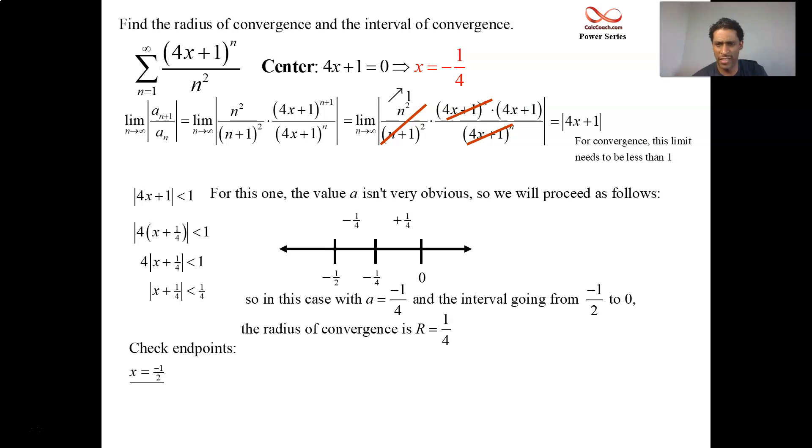Let's check negative 1 half. It's kind of small down here. Sorry if you can't see it in the corner. We're going to let x equal negative 1 half. Go into the series. Replace x with negative 1 half. Multiply it by 4, you get negative 2. Negative 2 plus 1 is a negative 1. This is your alternating 1 over n squared. It's going to converge for sure. Alternating series test.